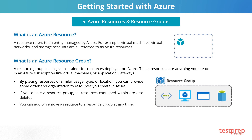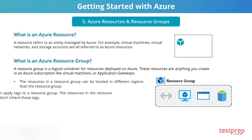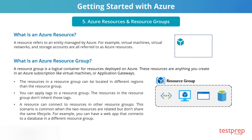You can add or remove a resource to a resource group at any time. Resource groups are also a scope for applying role-based access control permissions. The resources in a resource group can be located in different regions than the resource group. You can apply tags to a resource group, but the resources in that group don't inherit those tags. A resource can connect to resources in other groups — this scenario is common when two resources are related but don't share the same life cycle. For example, you can have a web app that connects to a database in a different resource group.